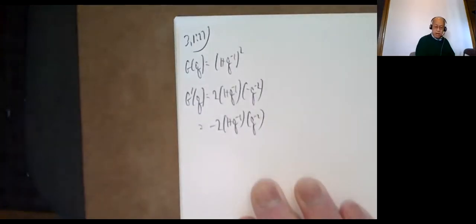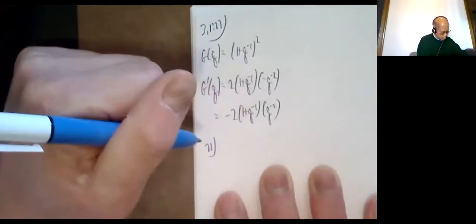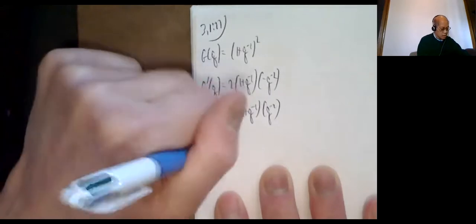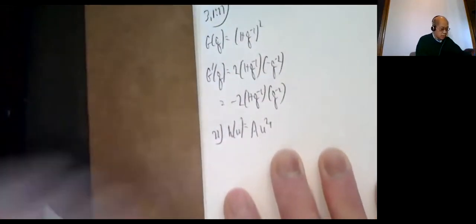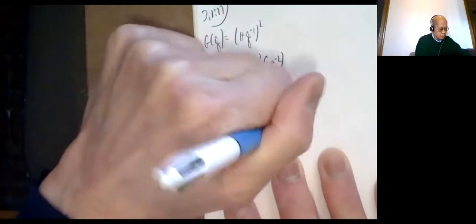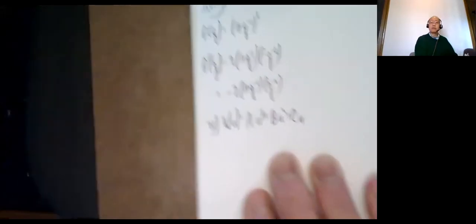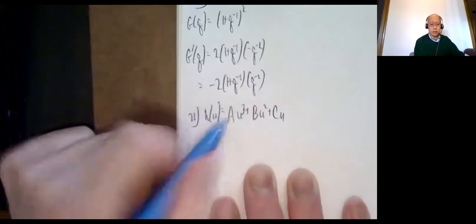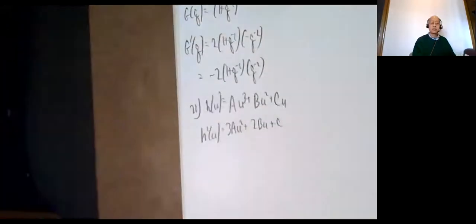3.1 number 21. H of U equals AU³ + BU² + CU, where A, B, and C are considered constants. So H prime of U is 3AU² + 2BU + C. And that's all there is to it.